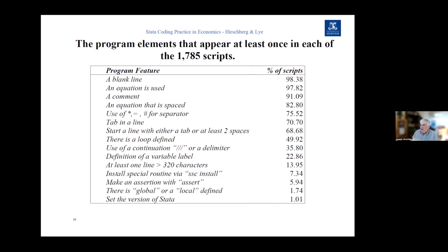I also looked at use of globals and locals, which I find really useful but was surprised to find are used very little. The last thing is setting the version of Stata in the program. Since Stata is not fully downward compatible, it's sometimes necessary to specify the version so that the program works correctly for future users under newer versions — that's an important factor to include if you want the program to be useful long-term.